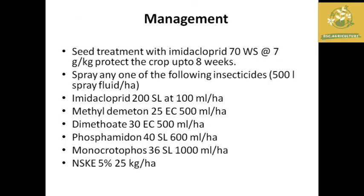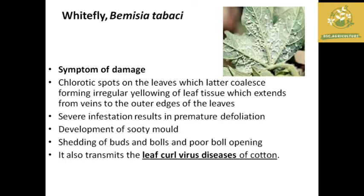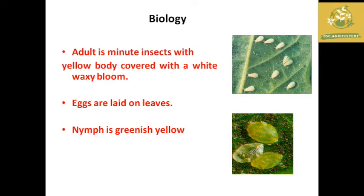Management for thrips involves spraying insecticides like imidacloprid, methyl demeton, dimethoate, and neem seed kernel extract at the recommended dose. The next pest is whitefly, with scientific name Bemisia tabaci. The major symptom is premature defoliation and it also acts as a transmitter of leaf curl virus disease in cotton.